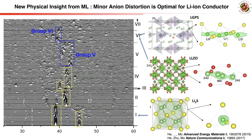In addition to materials discovery, machine learning also provides new physical insight. The clustering is based on ion framework, which determines ion migration. Groups 1, 2, and 3 correspond to FCC, HCP, and BCC ion sublattices respectively. Groups 4, 5, and 6 are structures with slightly distorted ion sublattices. This minor distortion provides enlarged lithium sites allowing lithium to occupy multiple positions, leading to geometric frustration and disordering of the lithium-ion sublattice — features that are essential in superionic conductors. More mechanistic studies can be found in our other work.